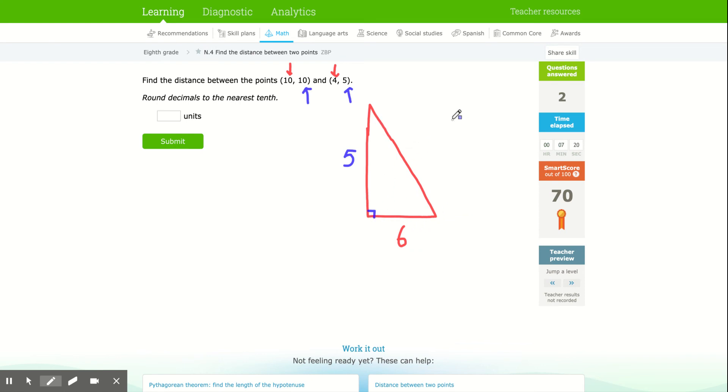Now I found the two legs of my right triangle, the horizontal and the vertical. I just need to find this side. Square 5, that's 25. Square 6, that's 36. Add those together, we're going to get 61. Now, if you'll notice, it says round decimals to the nearest tenth.